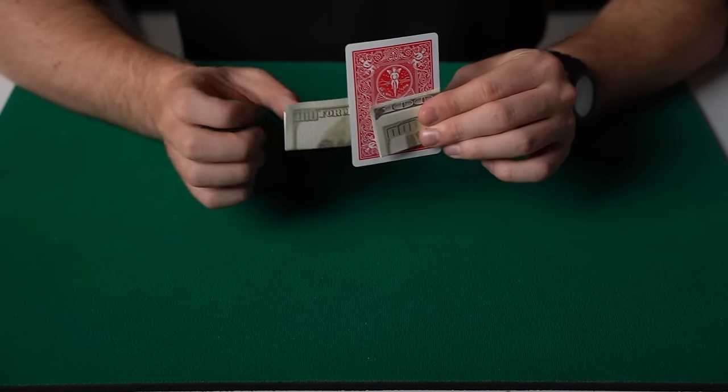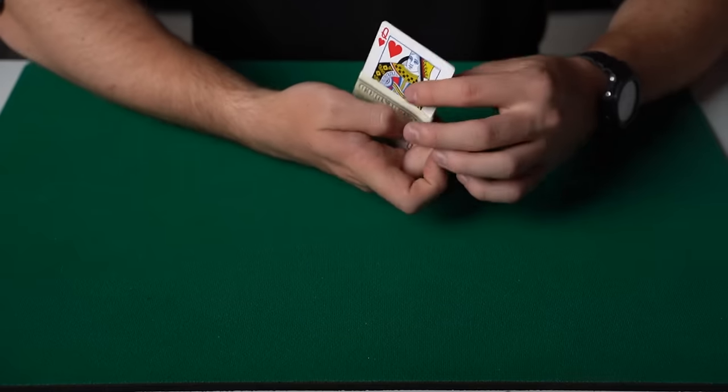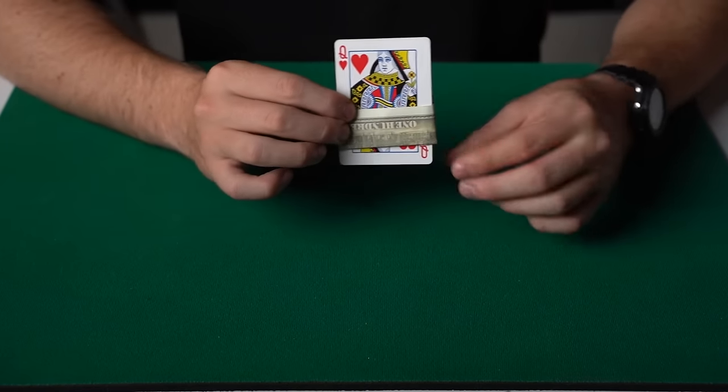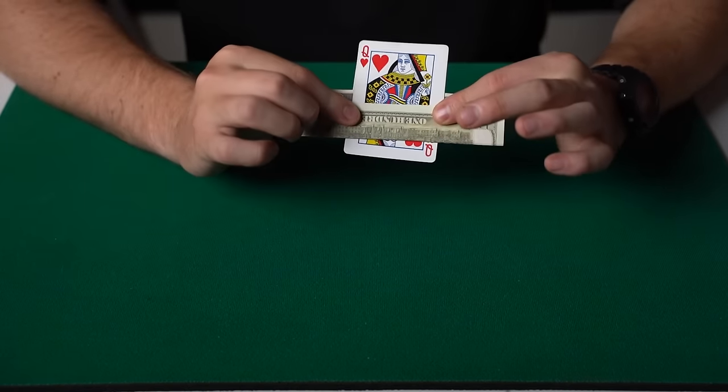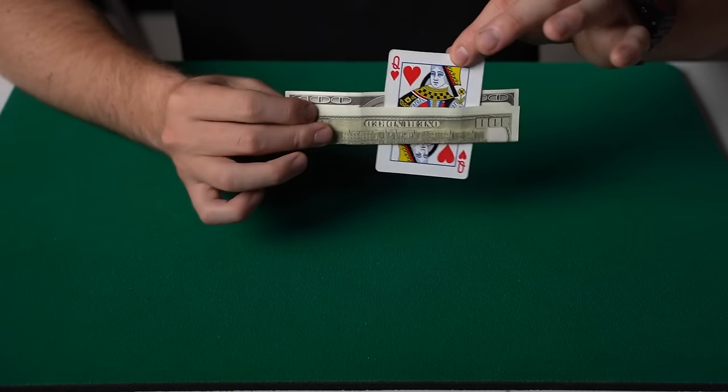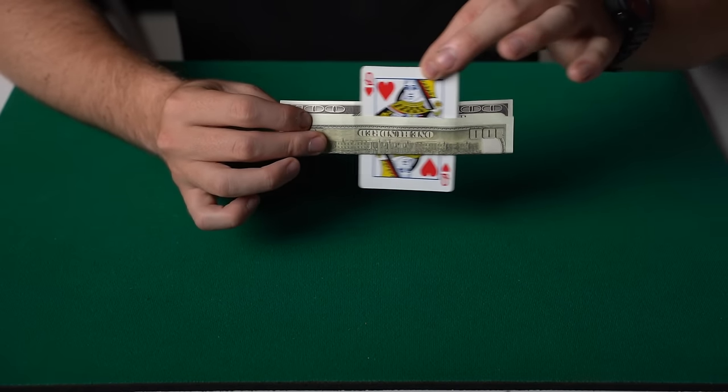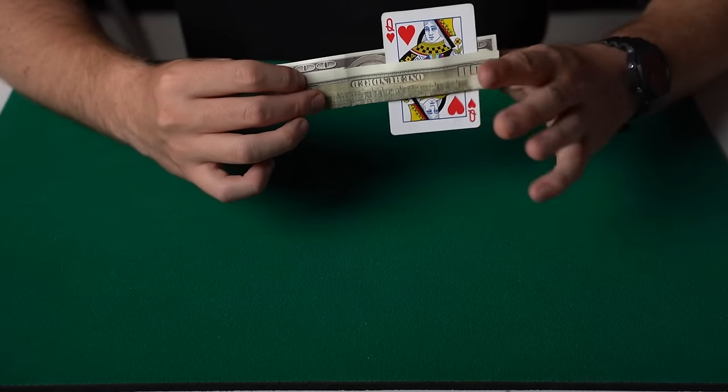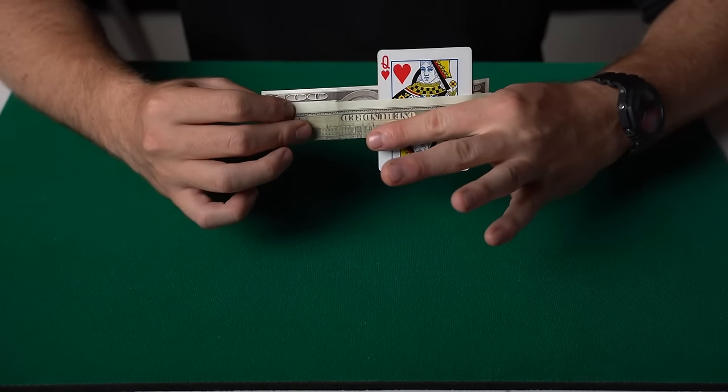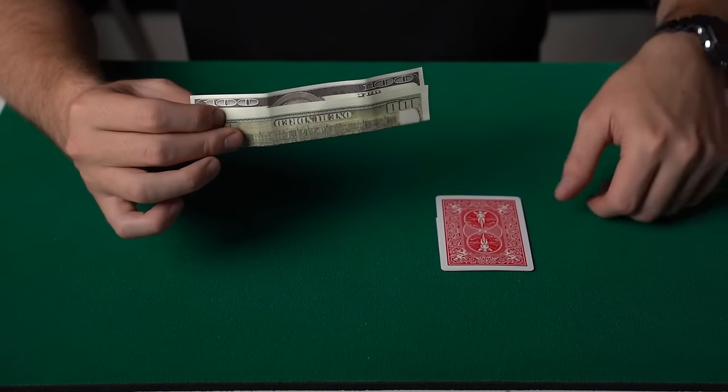Then you wrap the bill around the playing card, shake and twist. And you now say, look, the playing card is melted straight through the bill. This is super visual in itself, but then you can actually move the playing card around, move it left, right, up, down. And then when you want to finish the illusion, you just take your finger here, pull the playing card out and drop it onto the table.